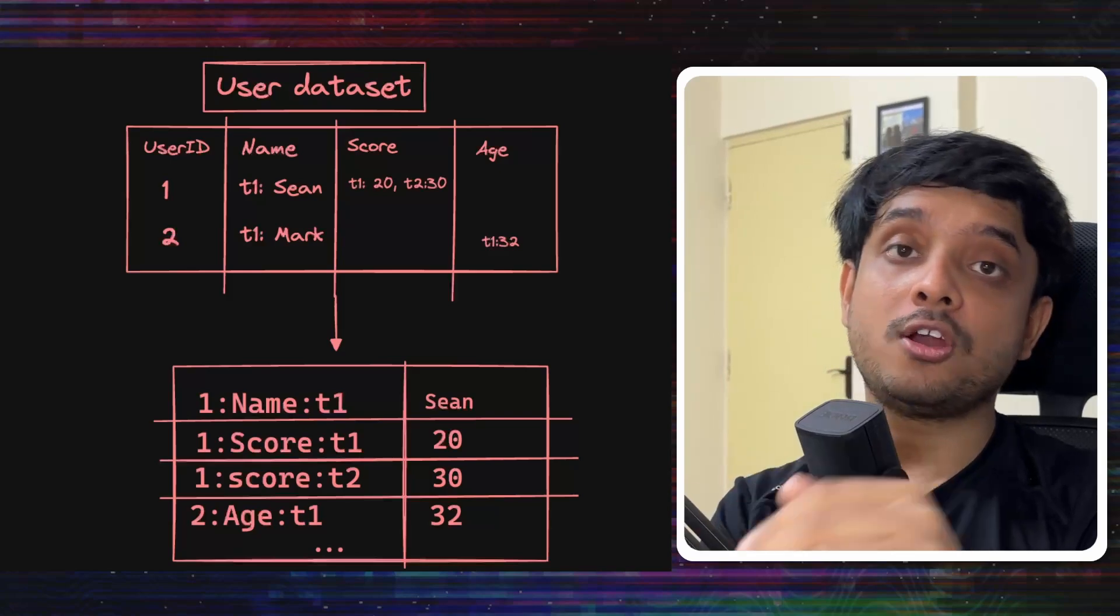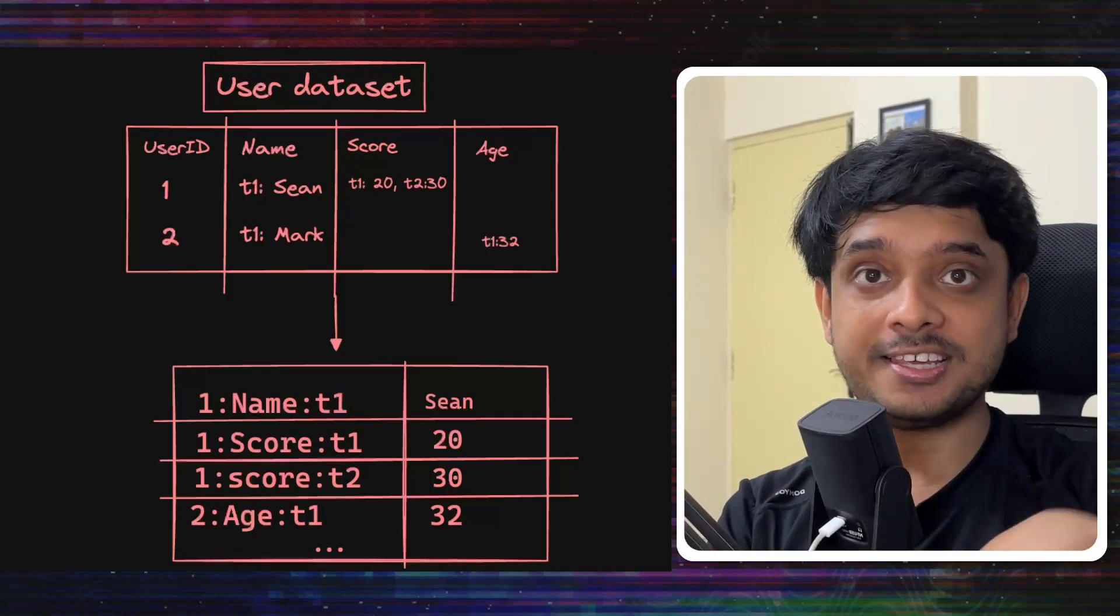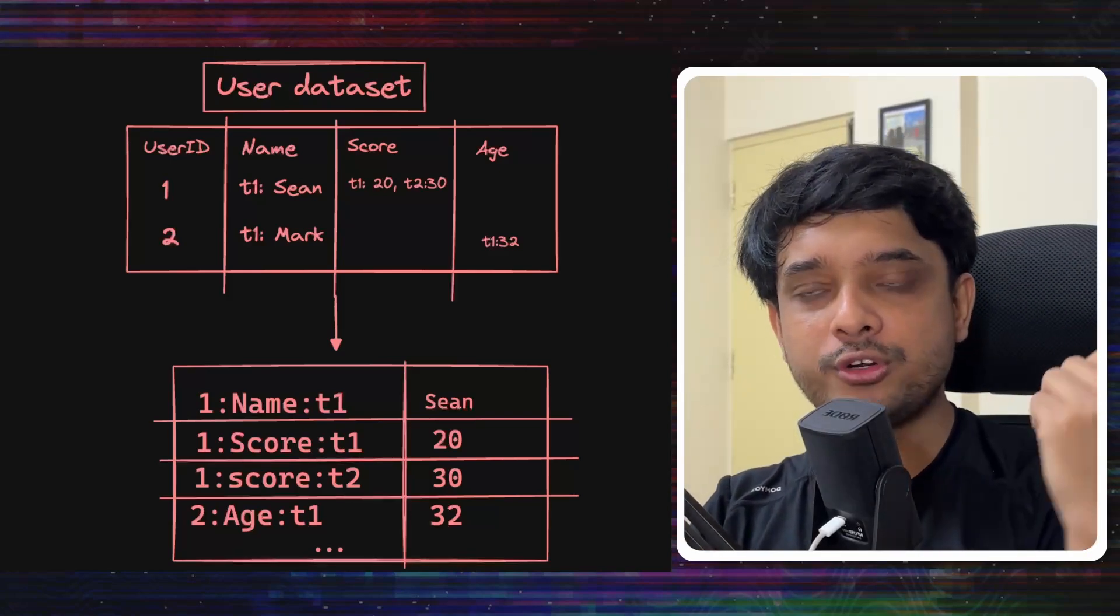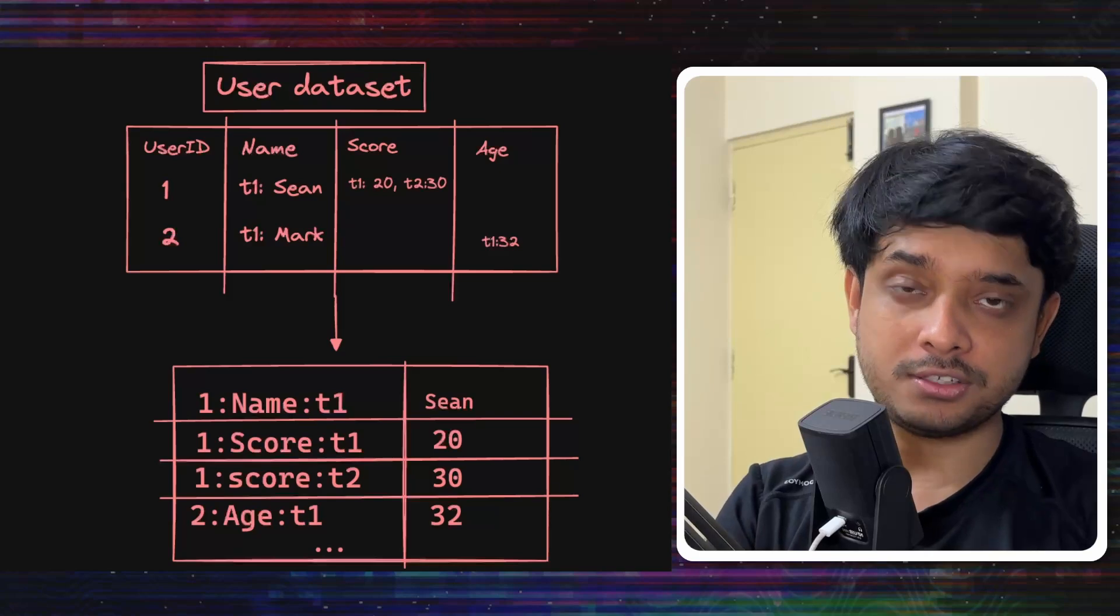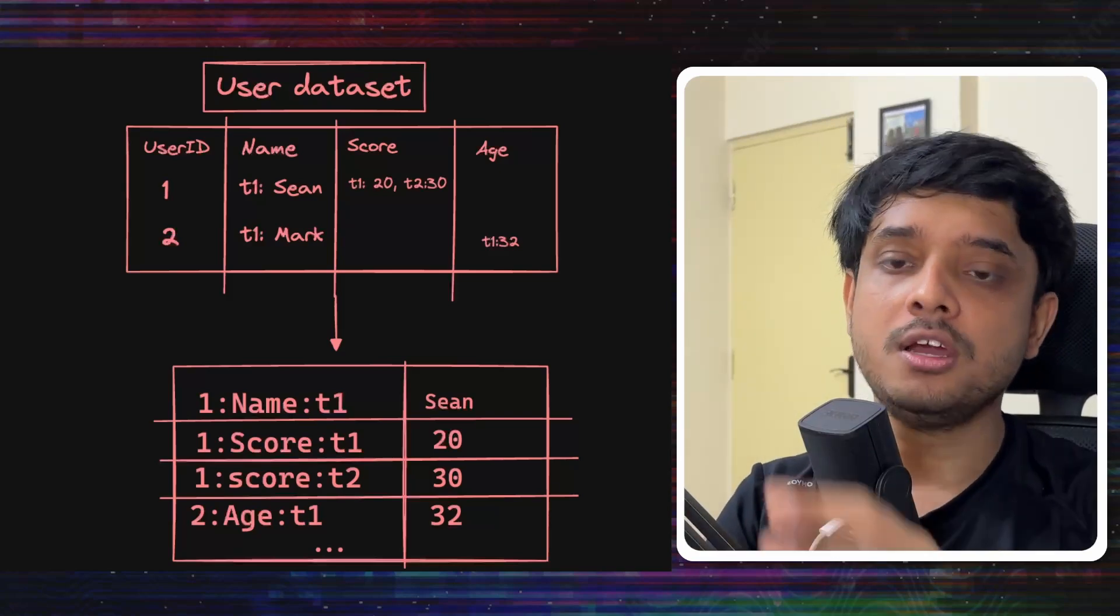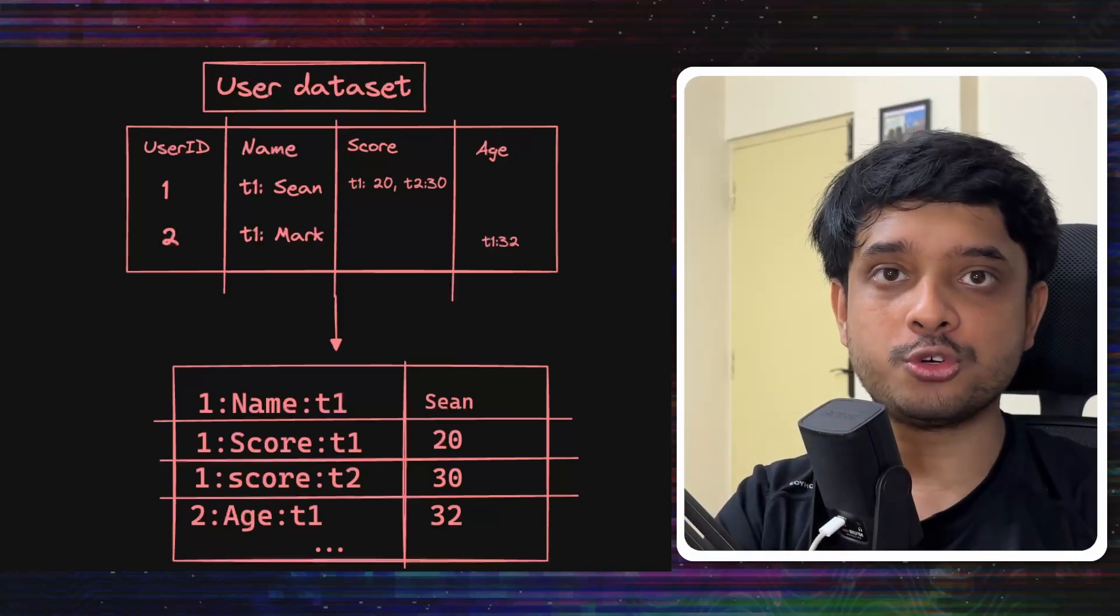Now that we know all this let's model all this on top of RocksDB in a key value format. What I'm going to show you is a very common pattern that is used by multiple other databases as well to map other paradigms into a key value format.